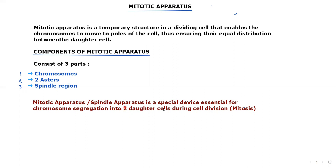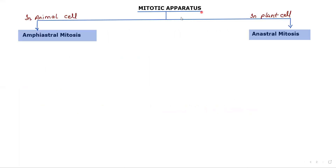Now let's see the mitotic apparatus in plant and animal cells. In animal cells, mitosis is amphiastral, whereas in plant cells it is anastral. Let's explore what amphiastral mitosis and anastral mitosis mean.